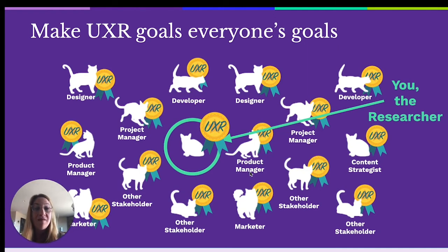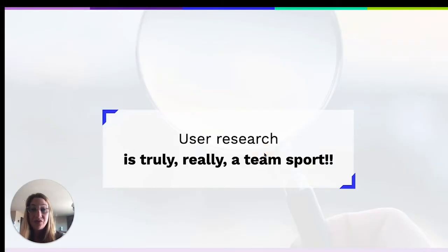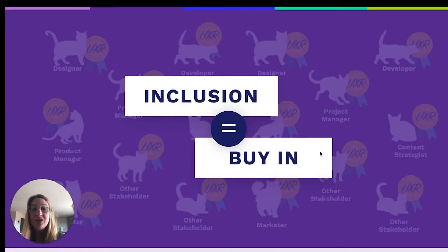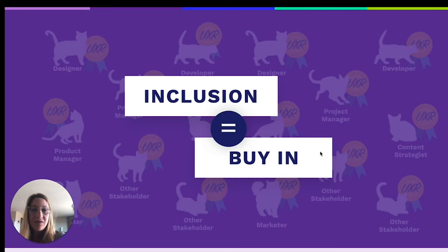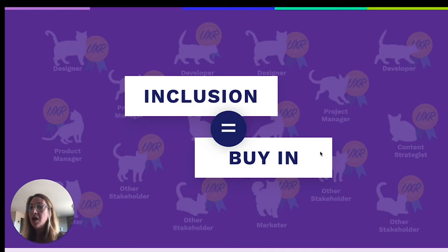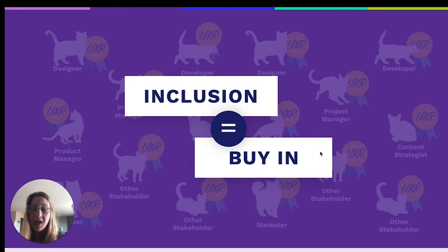When we make research goals everyone's goals, everyone is more bought in and we're working towards the same goalposts. User research truly is a team sport, and it starts with the plan. Inclusion is going to equal buy-in. If we want buy-in, we need to include our stakeholders at every single step, and the most important step is when we're making that plan. The more bought in and engaged they are in the overall process, the more likely they will act upon the learnings. That's the ultimate goal — to move from insights into action.